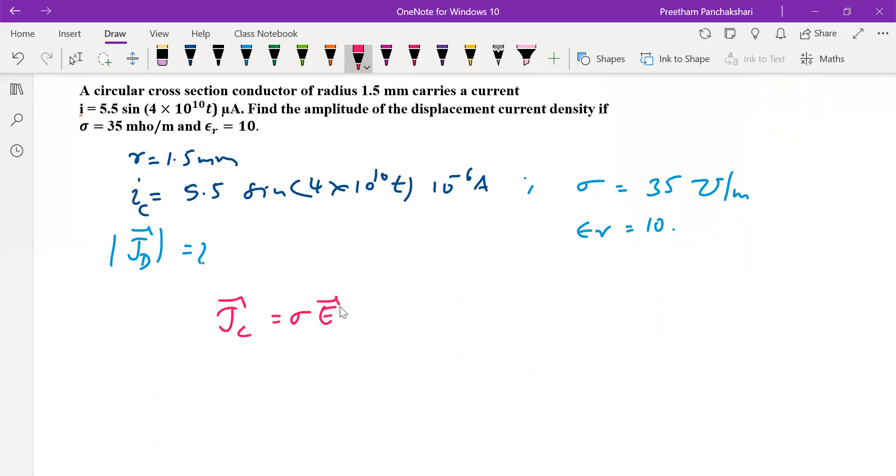Displacement current density is given by the time differentiation of electric flux density. D is ε times electric field. We know that for any sinusoidal variation this current is also sinusoidally varying. For any sinusoidal variations we can replace d/dt as jω in complex domain.